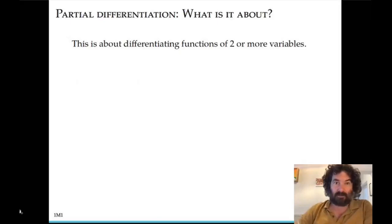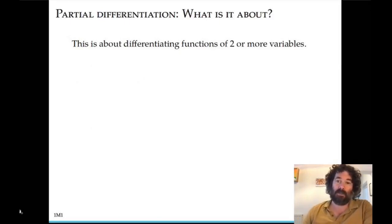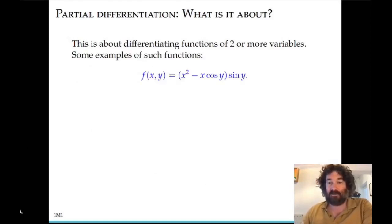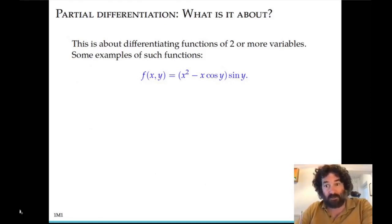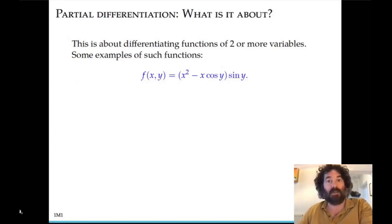What is partial differentiation? This is about differentiating functions of two or possibly more than two variables. We're quite accustomed to thinking about functions of a single variable and their graphs, but in many applications we have a quantity that depends on more than one variable. A simple example of a function of two variables is x squared minus x times cosine of y — the variables here being x and y.